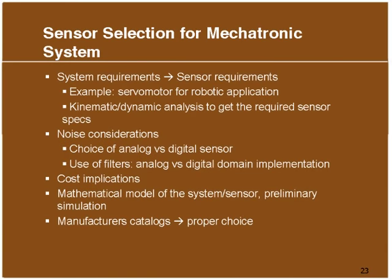Now let us come to sensor selection. Based on your conceptualized mechatronics system, once you know the variable you want to sense — say displacement, where you can have encoders or many other possibilities — you need to come up with sensor requirements. What exactly will suffice your job? You should not have something that is overkill, and at the same time not something that will not work. Without detailed analysis you might come up with a specification you know will work, but you need to check whether it is overkill for your system.